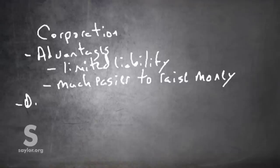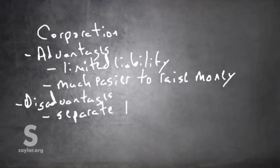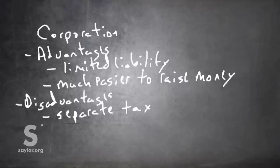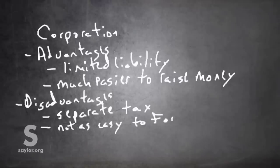What about the disadvantages? There are some notable disadvantages to a corporation. In the United States, they pay a separate income tax. Whereas a partner or sole proprietor pays taxes as part of their personal income tax, owners of shares in a corporation pay income tax, and so does the corporation as a separate legal entity — resulting in double taxation. Another disadvantage is that it's not as easy to form, particularly with regard to the expenses involved in formation and maintaining the company.